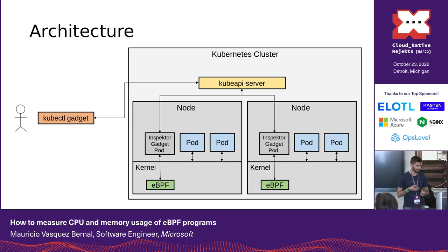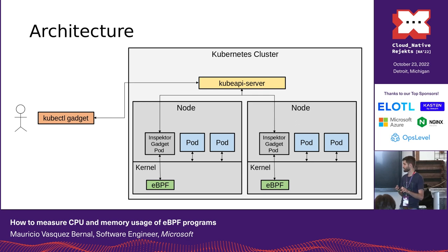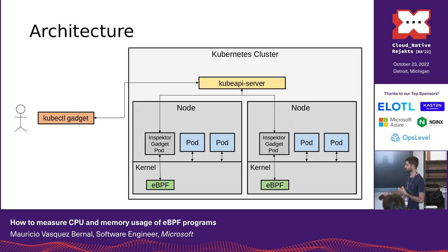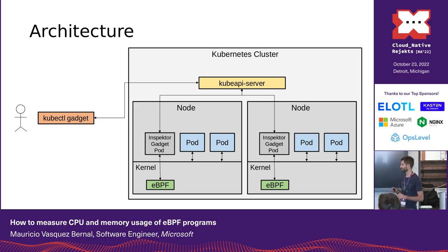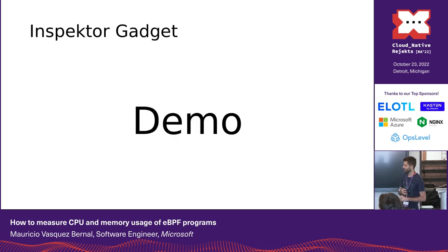This is the architecture of Inspector Gadget. We run Inspector Gadget as a DaemonSet on the clusters — there is one Inspector Gadget pod per each node on the cluster. There we use eBPF: we inject eBPF programs in the kernel to get the information. Since the kernel is shared between all the pods running on the same node, we are able to get information about the activity that the different pods are doing. The user interacts with Inspector Gadget using the kubectl gadget plugin. In the current implementation, we implement Inspector Gadget as an operator with a custom resource, which is why we go through the API server.